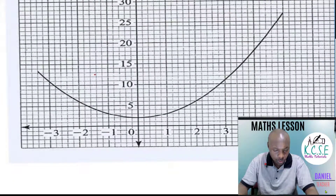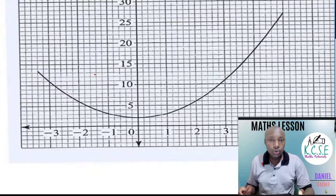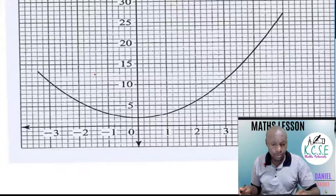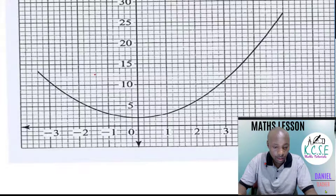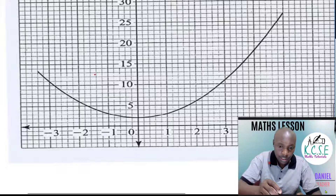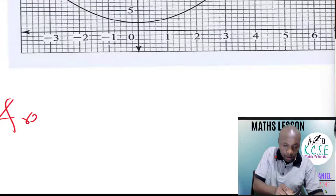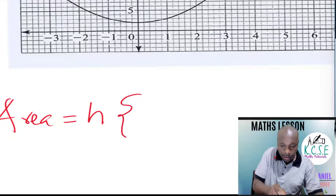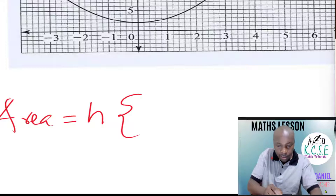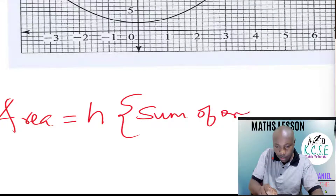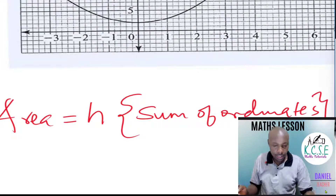We are going to use the mid ordinate rule. We need to understand first how to use the formula for calculating the area under the curve using the mid ordinate rule. Area is given by height multiplied by the sum of the ordinates. That is the mid ordinate rule.